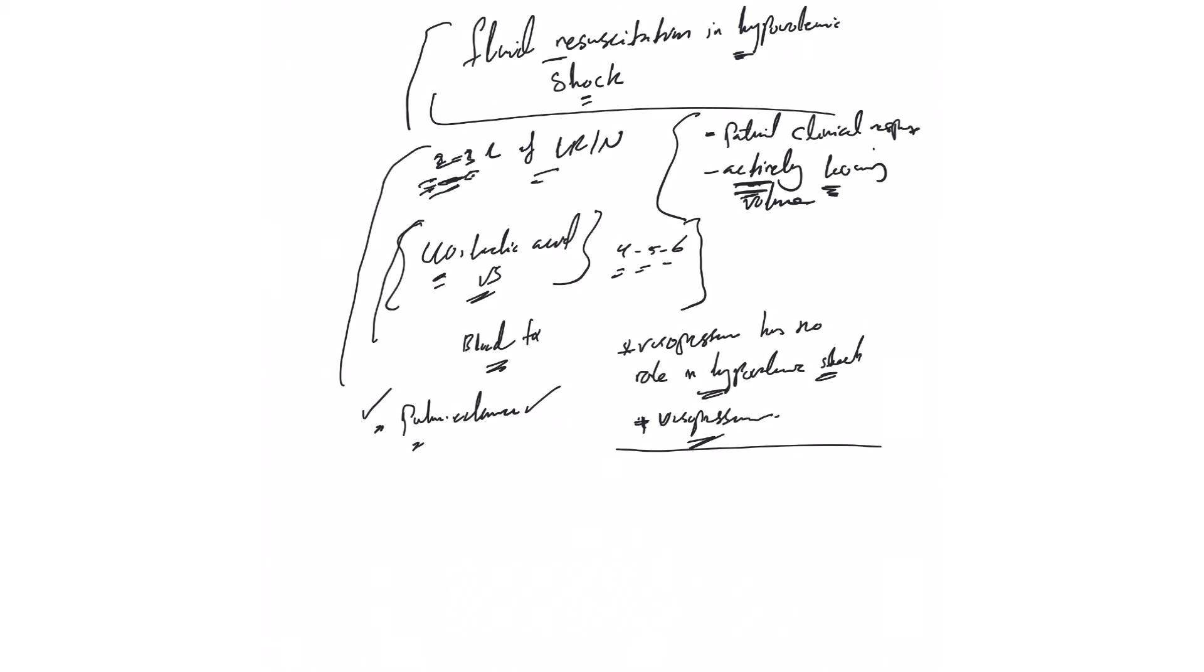Again, remember with hypovolemic shock: you start off with two to three liters as fluid boluses, monitor response. If still hypoperfused, continue giving fluids. Monitor for pulmonary edema and try to control the source.